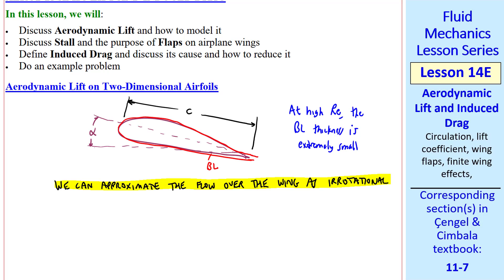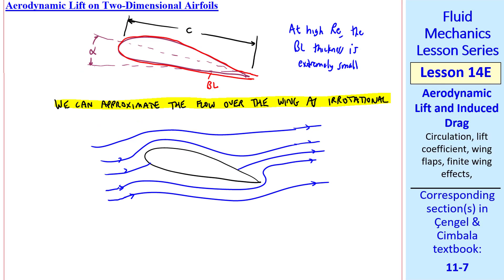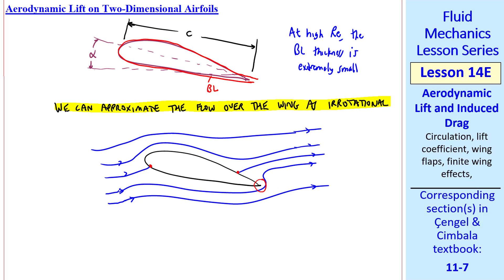There are potential flow codes that can calculate the irrotational flow or potential flow around a body such as this. The problem is that the streamlines would look something like this, where you have a stagnation point in the front and another one on the top of the airfoil near the back. The flow here is unphysical because a real flow could never make this sharp turn. This potential flow would also yield zero lift.